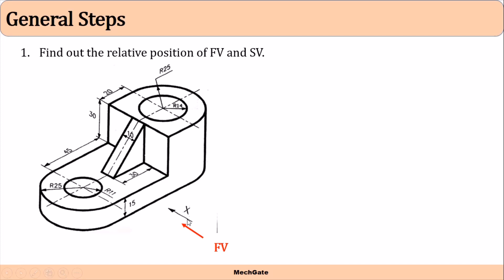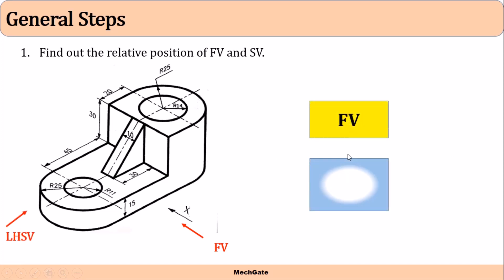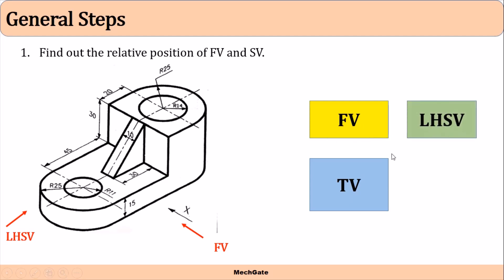Let's say this is my object and this is the direction of the observer — that's the front view direction. To view the side view, I have to see from this side, which is the left hand of the observer, so this becomes the left hand side view. Therefore, the left hand side view should be drawn on the right side of the front view. Also, the top view is always drawn below the front view in first angle projection.